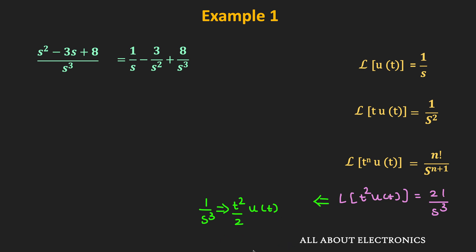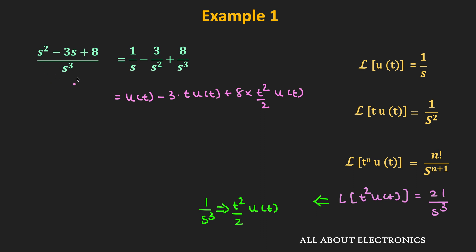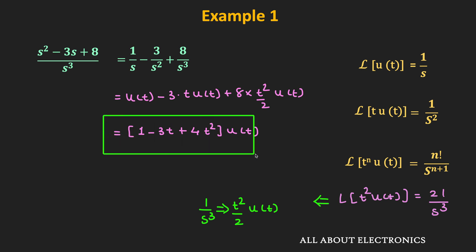Using the Laplace transform table we can find the corresponding time domain function for each term. The inverse Laplace transform of 1/s is u(t), the inverse Laplace transform of 3/s² is 3t·u(t), and 8/s³ corresponds to 8·(t²/2)·u(t). Therefore the inverse Laplace transform of the given expression is (1 − 3t + 4t²)·u(t).